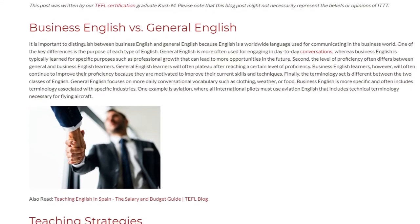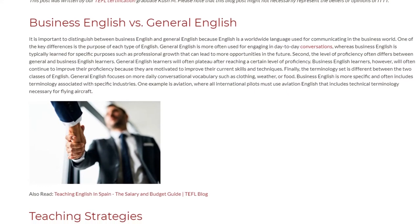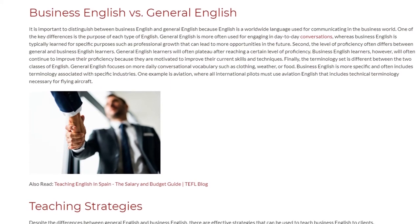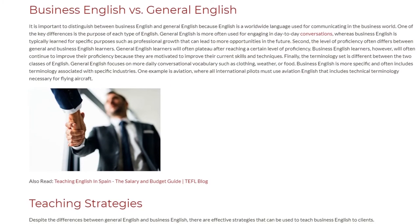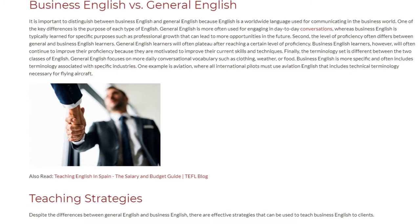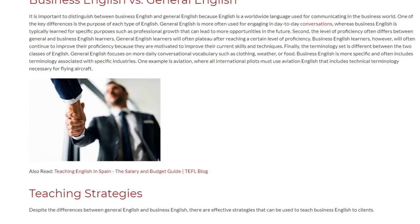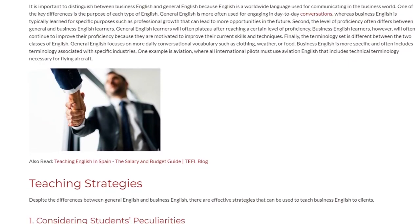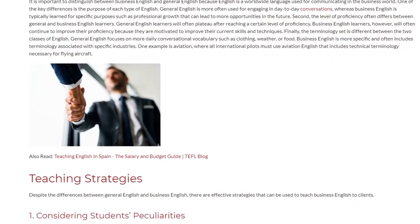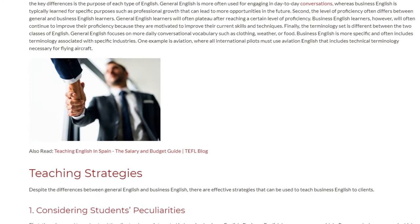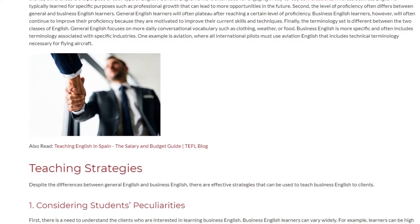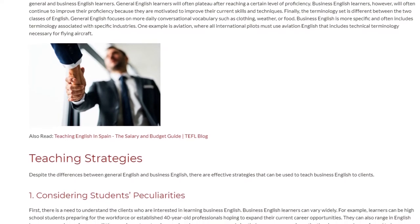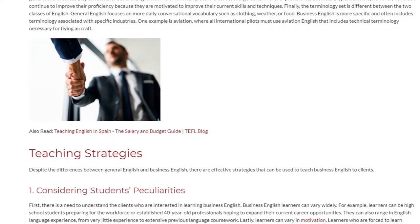Finally, the terminology set is different between the two classes of English. General English focuses on more daily conversational vocabularies such as clothing, weather, or food. Business English is more specific and often includes terminology associated with specific industries. One example is Aviation, where all international pilots must use Aviation English that includes technical terminology necessary for flying aircraft.